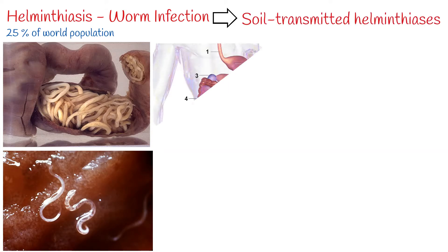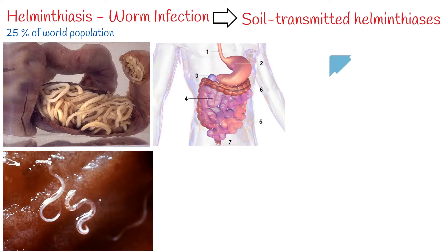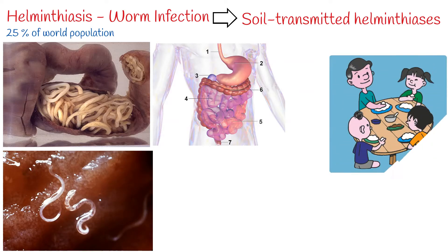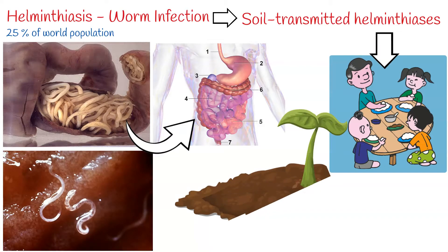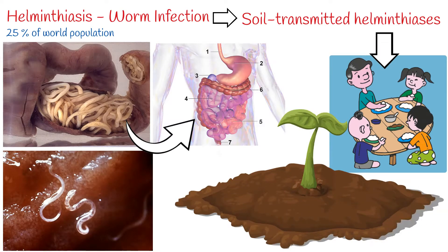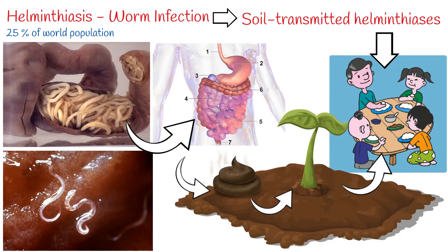Soil-transmitted helminthiasis are the most common intestinal worms infecting humans. Soil-transmitted means transmission of the parasitic infection happens via contaminated soil. Soil-transmitted helminths live in the intestine and their eggs are passed in the faeces of infected persons. If a person defecates outside or does not keep appropriate hygiene, there is a high chance that people ingest these worm eggs and become infected.